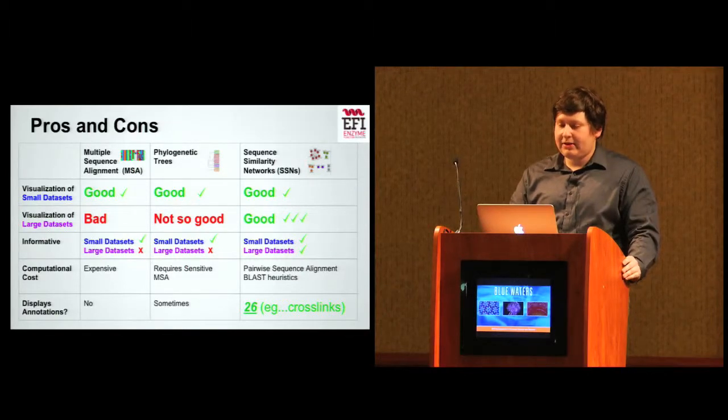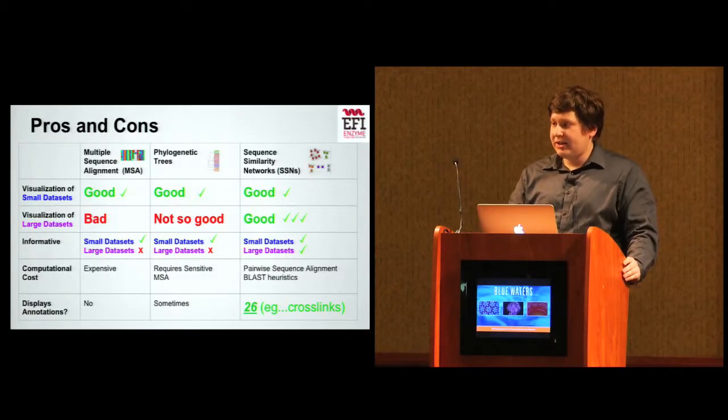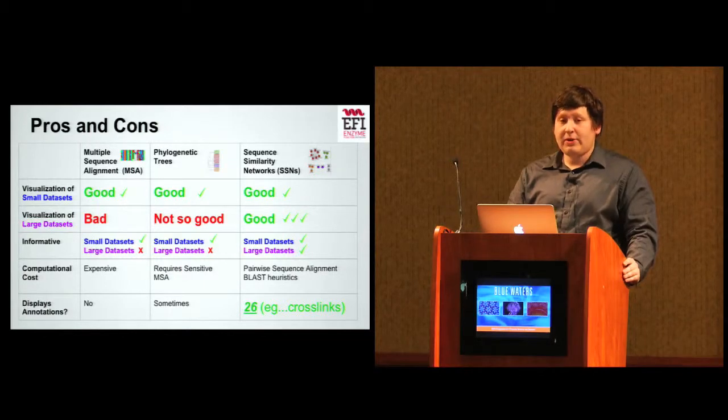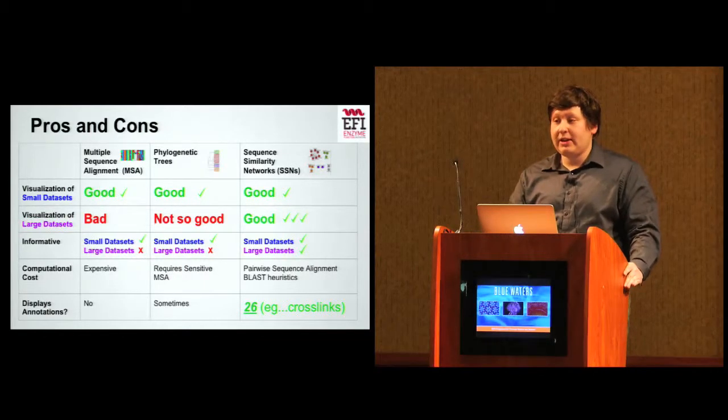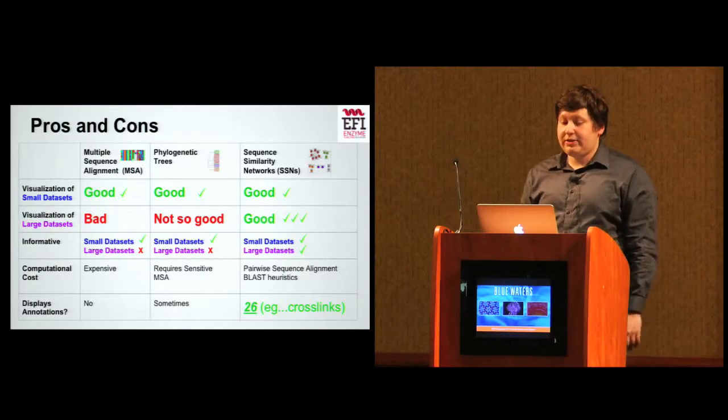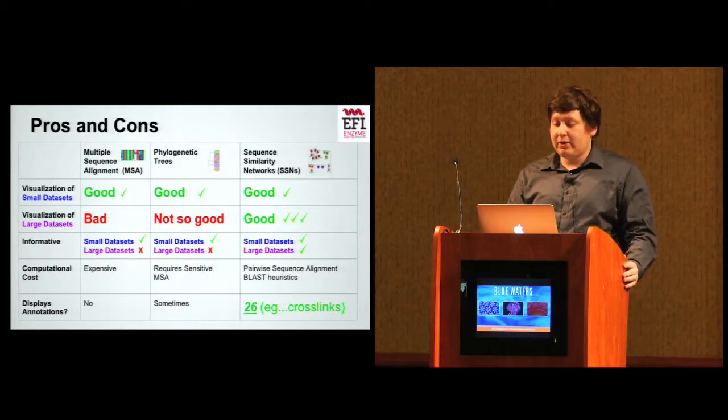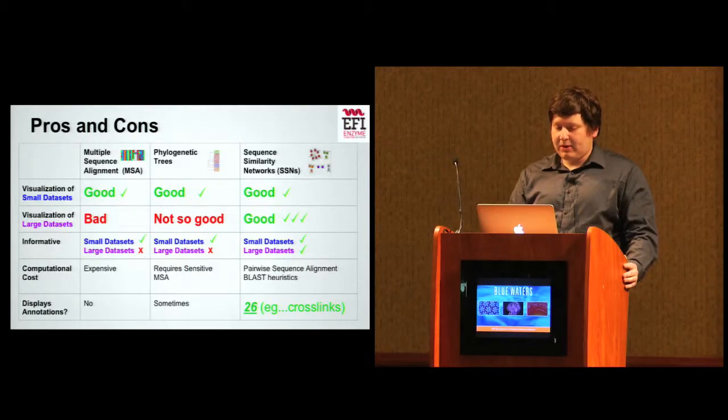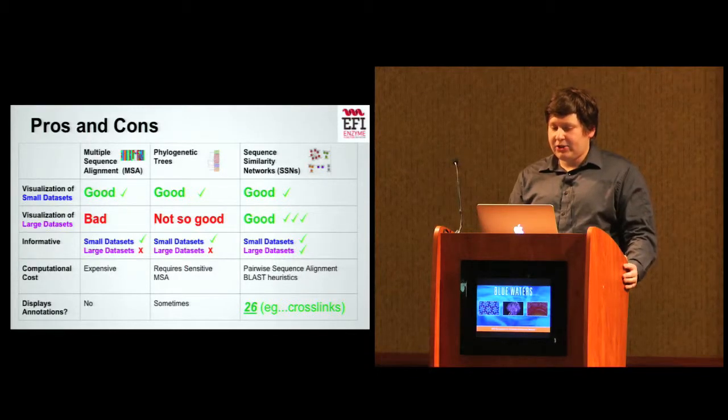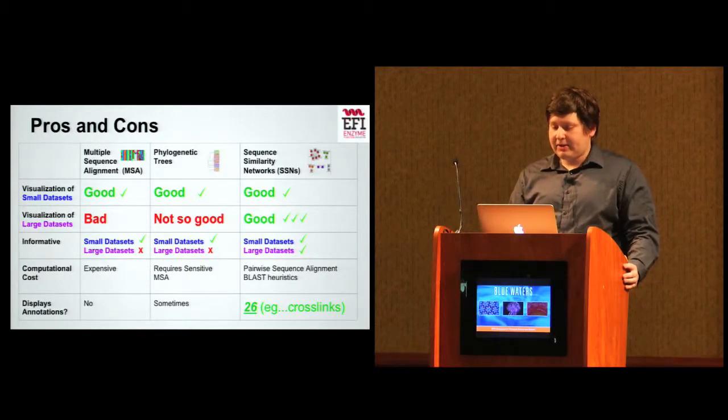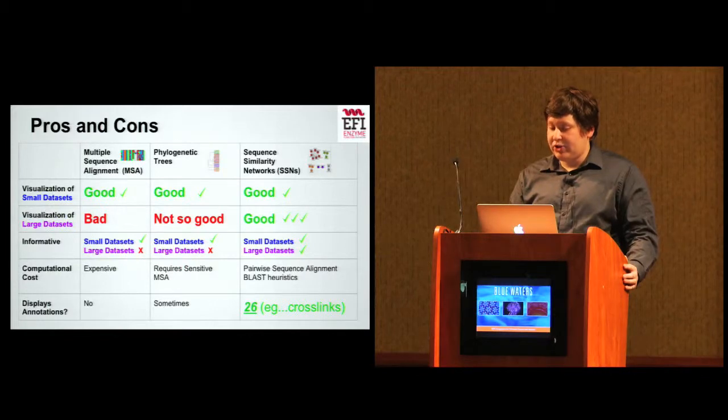For visualizing small datasets, multiple sequence alignment and phylogenetic trees and sequence similarity networks are all pretty good. But once you start getting into large datasets and looking at large numbers of proteins, it's not so good anymore. Sequence similarity networks are suited for that. Small datasets are informative for multiple sequence alignment and phylogenetic trees, but large datasets are not. That's where sequence similarity networks really shine.